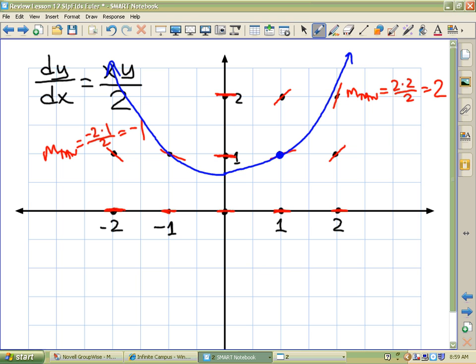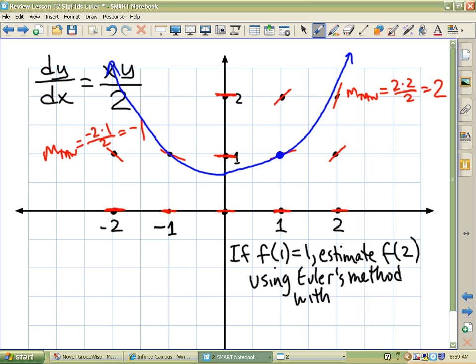So let me go one step further with this. If f of 1 is 1, estimate f of 2 using Euler's method with delta x is 0.5. Because I've never seen an Euler's method question that didn't use two subintervals. So I'll use two subintervals.